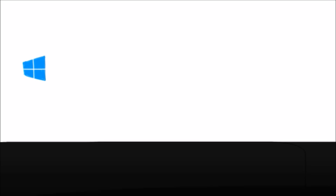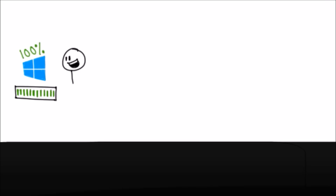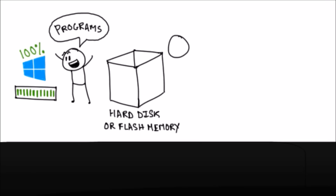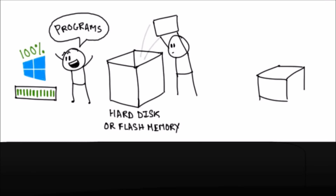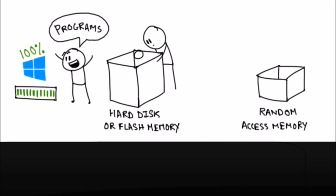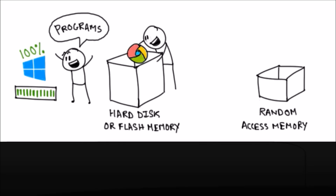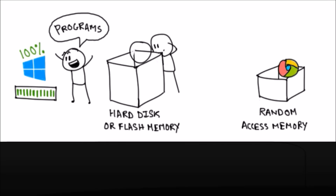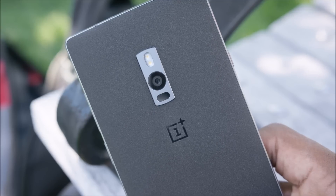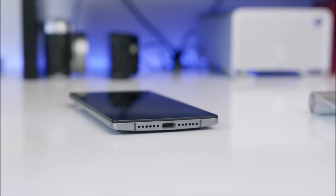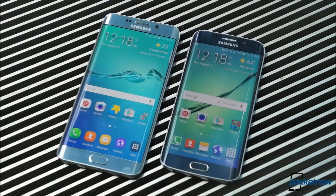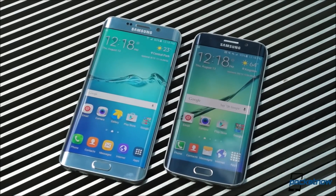In 2014, we were seeing 2 gigabytes of RAM in some devices, but in 2015, 3 gigabytes of RAM started to appear and became more and more popular as the year went on. But now in 2016, we have seen 4 gigabytes of RAM in some devices, such as the OnePlus 2, Samsung Galaxy Note 5 and the Samsung Galaxy S6 Edge+.